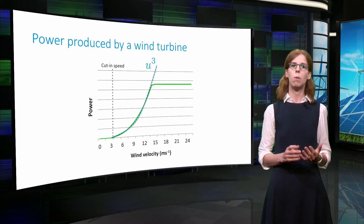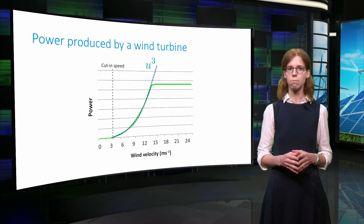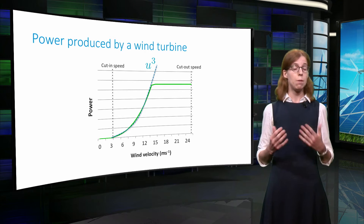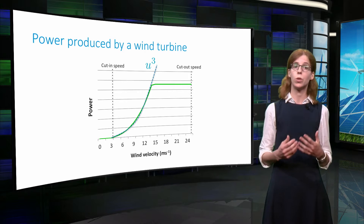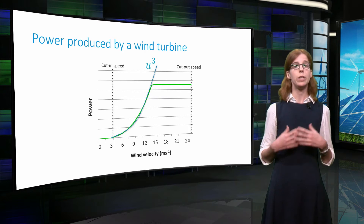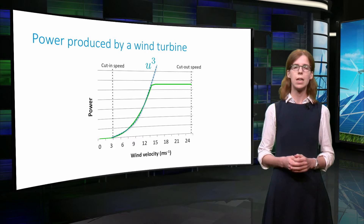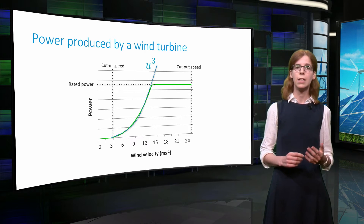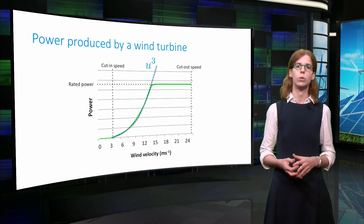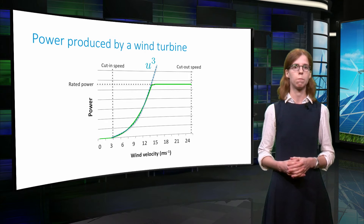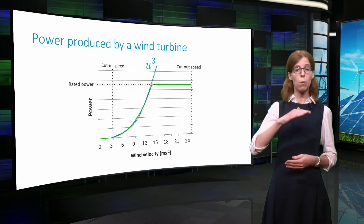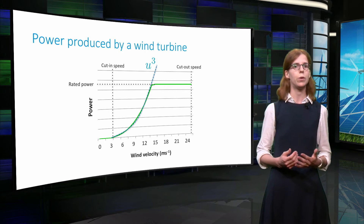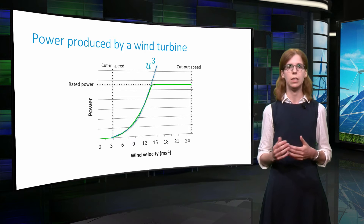The cut-in speed is typically about 3 to 4 m/s. On the other hand, if the wind is very strong, the loads on the rotor can become too large. Therefore, the so-called cut-out speed is the maximum wind speed at which power can be safely produced, and this lies typically around 25 m/s. Finally, the electrical generator also imposes a limit on the power that can be output. Just beyond a certain wind speed, the power is limited to a constant value. This value is called the rated power and typically occurs for wind speeds between 12 and 17 m/s.